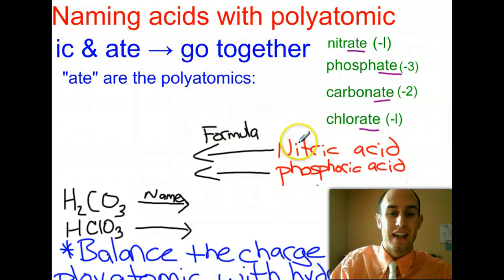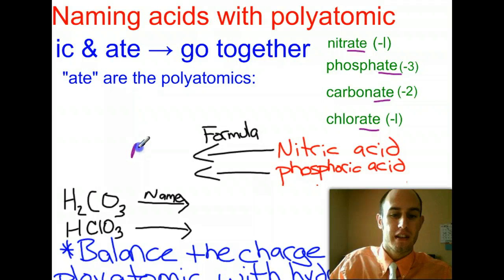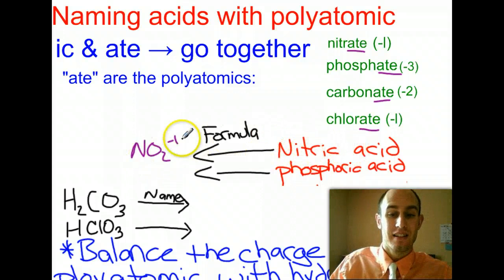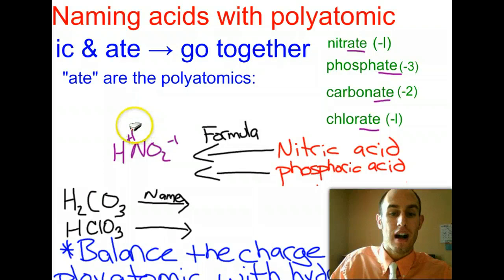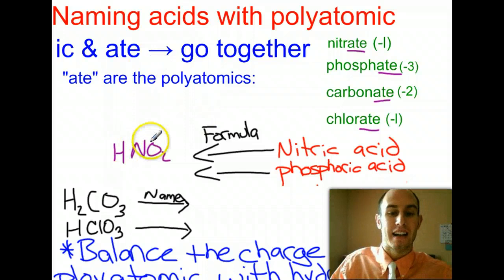We'll look at an example here: nitrous acid. Basically, you need to know the formula for nitrous is nitrate. You need to know the formula for nitrate. So, nitrate in this case is NO2, and it's going to have a charge of minus 1 on the nitrate ion. Well, to make nitrous acid, the negative 1 charge has to be balanced with a positive 1 charge of hydrogen. And in doing that, you get HNO2.